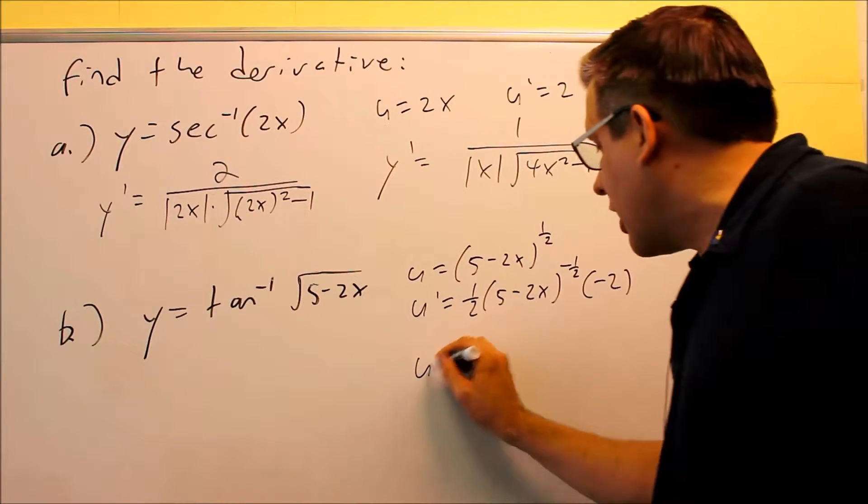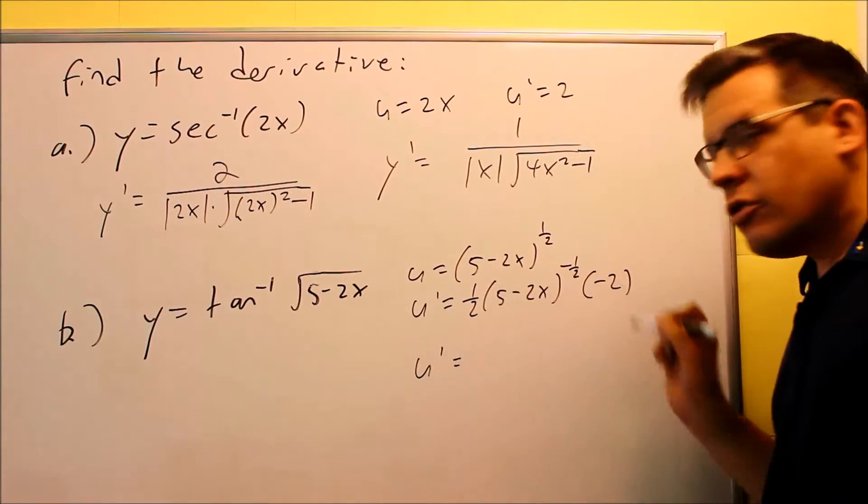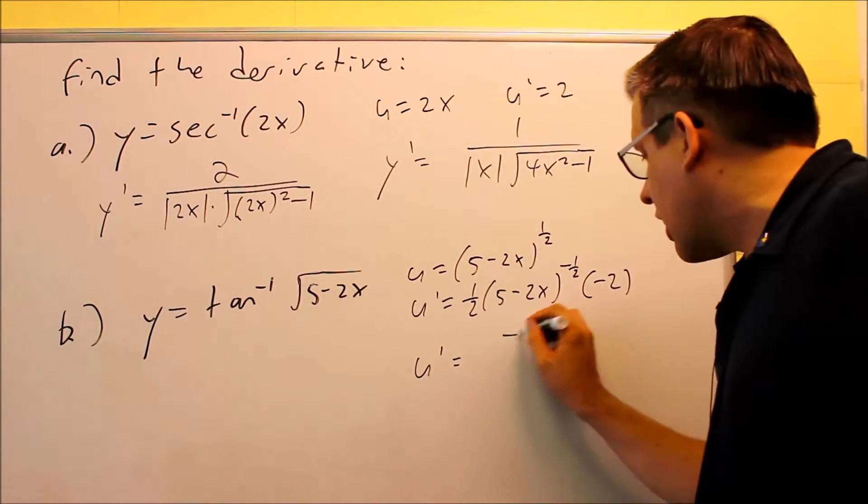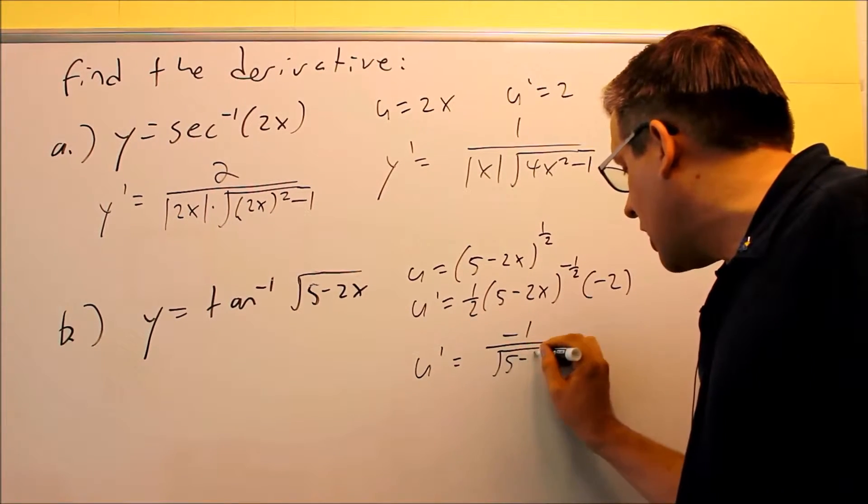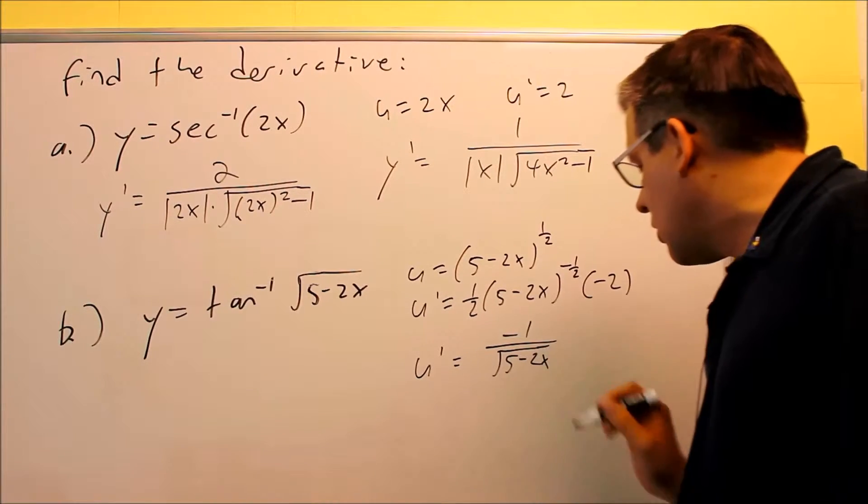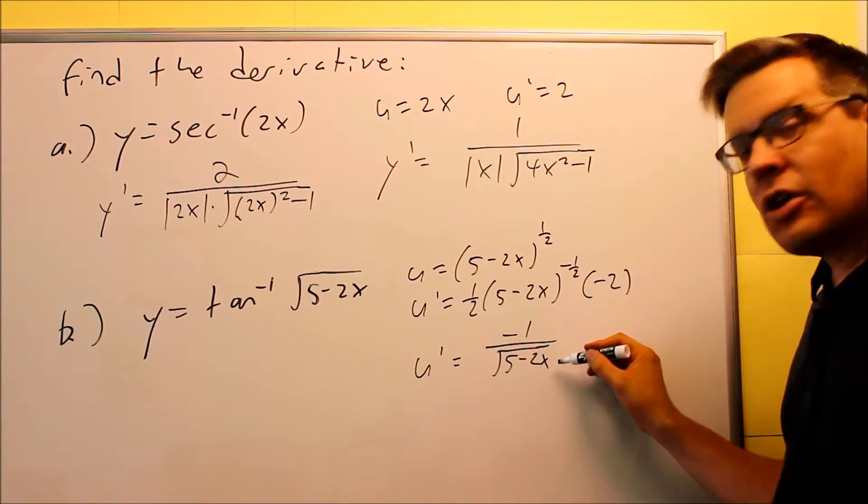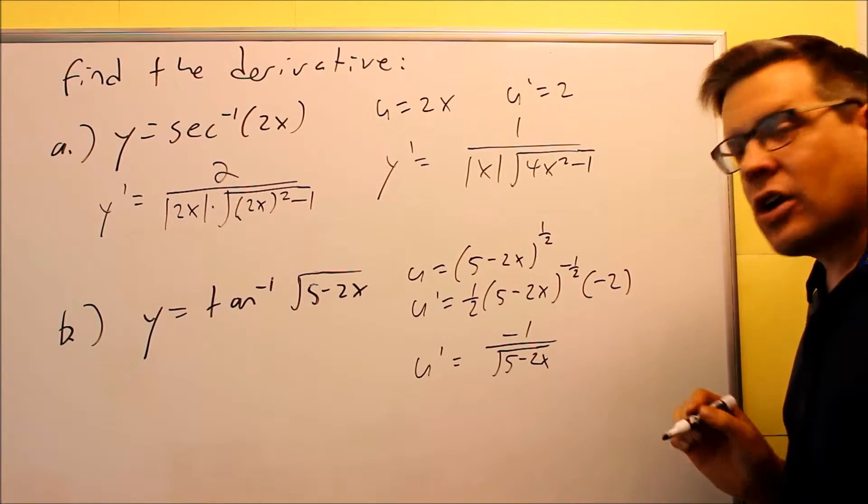So now I want to do some simplifying. The 2's are going to cancel out, so I get a negative 1 on top. This part I'm going to write back down below, so I get 5 minus 2x in the square root down below. That's as far as I can go with u-prime.